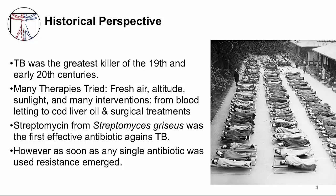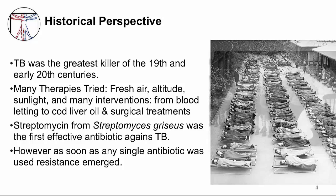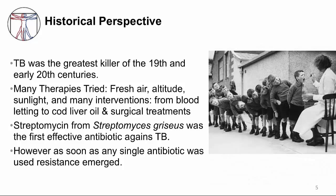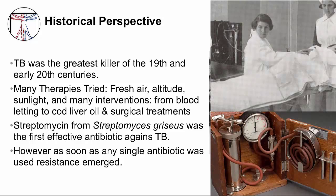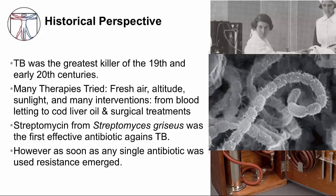You can see in the picture rows of children outdoors at a sanatorium. Interventions from bloodletting to giving cod liver oil were tried, and even surgical interventions were attempted. Collapsing the lung by artificial pneumothorax was also thought to be helpful. It wasn't until the 1940s that an effective antibiotic against TB was developed — streptomycin — which originated from a soil bacterium called Streptomyces griseus, belonging to the same phylum as MTB, actinobacteria. However, use of a single antibiotic quickly resulted in emergence of resistance.